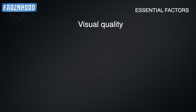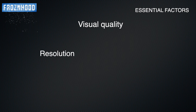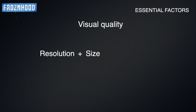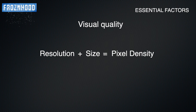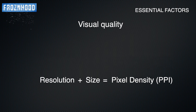When comparing two monitors with the same panel technology, the visual quality mainly depends on the resolution of the monitor and its size. Resolution means the number of horizontal and vertical pixels on the screen. Together with the screen size we get the pixel density — the number of pixels available in a given area on the screen. With higher pixel density, more details can be seen in games. Pixel density is measured in pixels per inch.